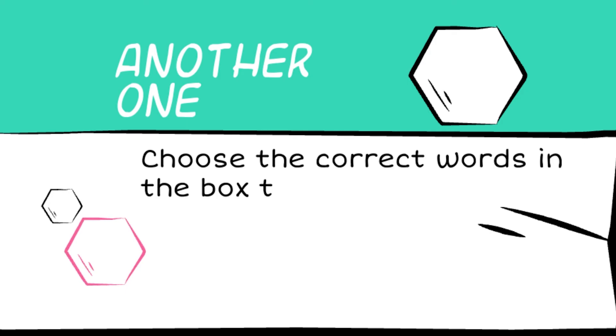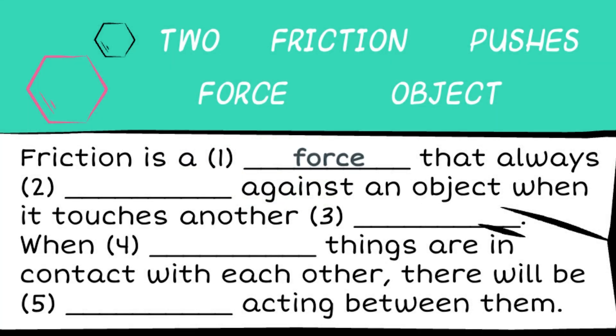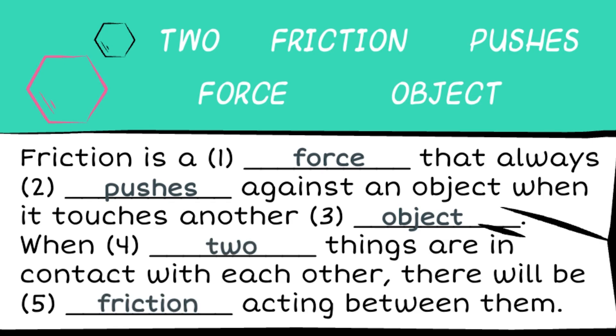Another one. Directions: choose the correct words in the box to complete the paragraph below. Friction is a [force] that always [pushes] against an [object] when it touches another. When things are in contact with each other, there will be [friction] between them. Answers: 1. Force. 2. Pushes. 3. Object. 4. 2. 5. Friction.